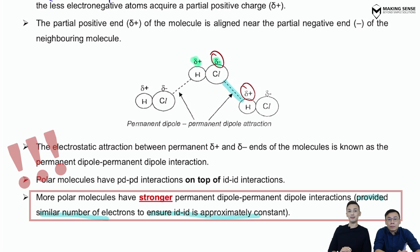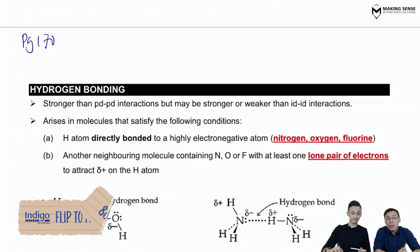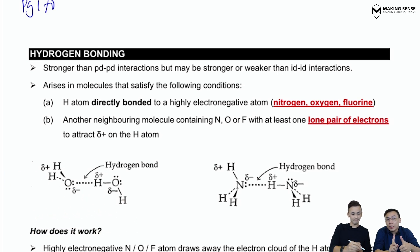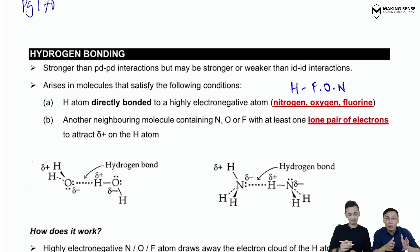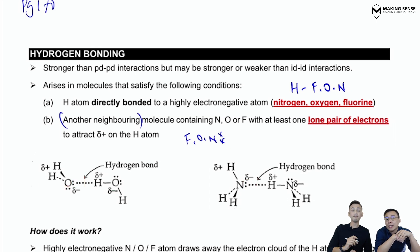The third force is hydrogen bonds. For hydrogen bonds to exist, two criteria must be satisfied. Firstly, the hydrogen atom must be bonded to what we call the FON—fluorine, oxygen, or nitrogen—the three most highly electronegative elements. On the neighboring molecule, this FON must have at least one lone pair of electrons available to attract the delta plus.